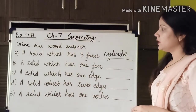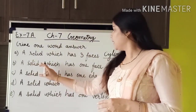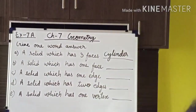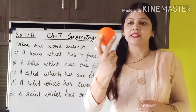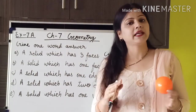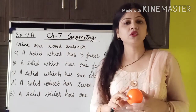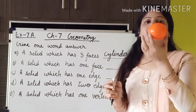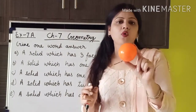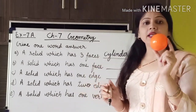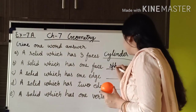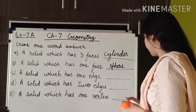The second question is: a solid which has one face. If you have remembered, I have told you that the sphere shape has only one face — one curved face. So here we will write: sphere.